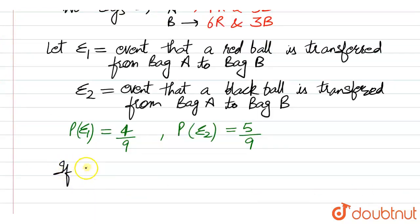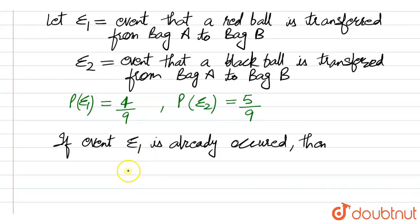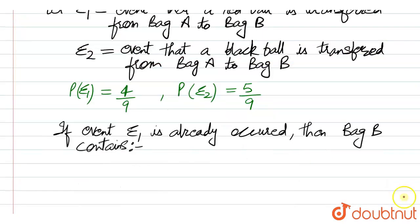If event E1 has already occurred, we have taken one red ball from bag A and put it into bag B, so the count of red balls in bag B would increase to seven. So bag B would contain seven red and three black balls.